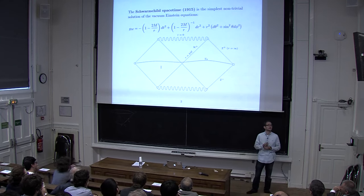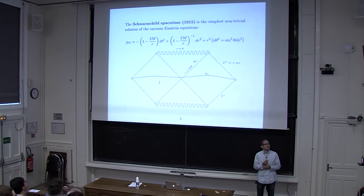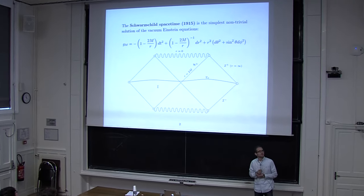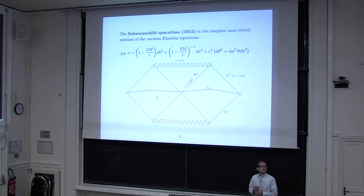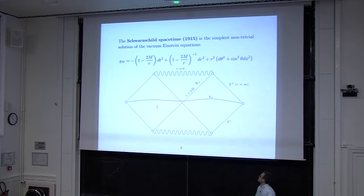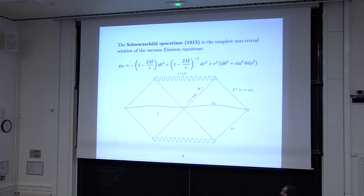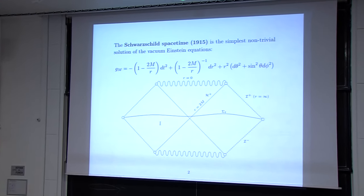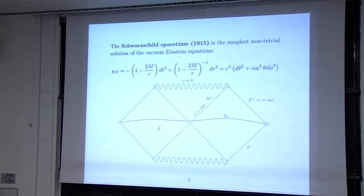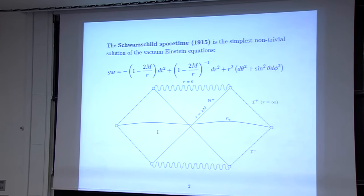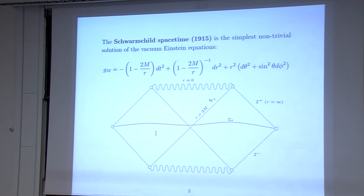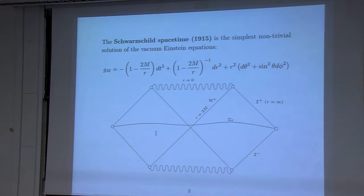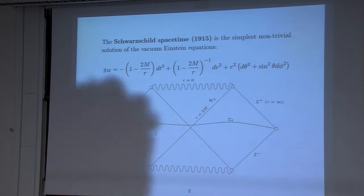Let me start by reminding you of the Schwarzschild solution, which is the simplest non-trivial solution of the vacuum Einstein equations. The key thing to remember is that it's static — there is a Killing field which is timelike on the black hole exterior, becomes null on the event horizon located at r equals 2m, and the metric is also spherically symmetric.